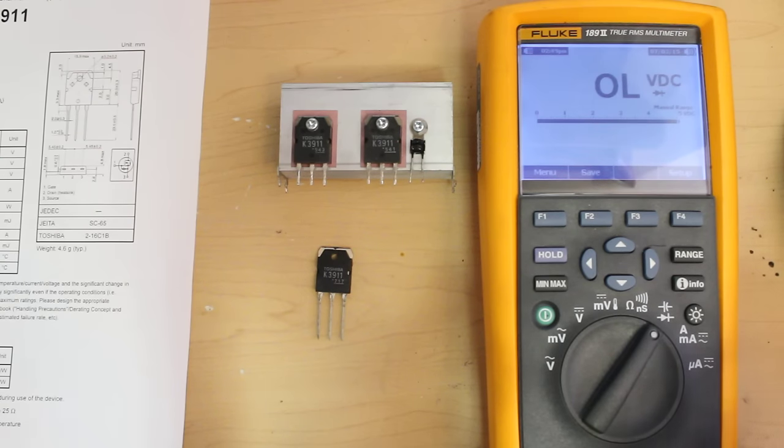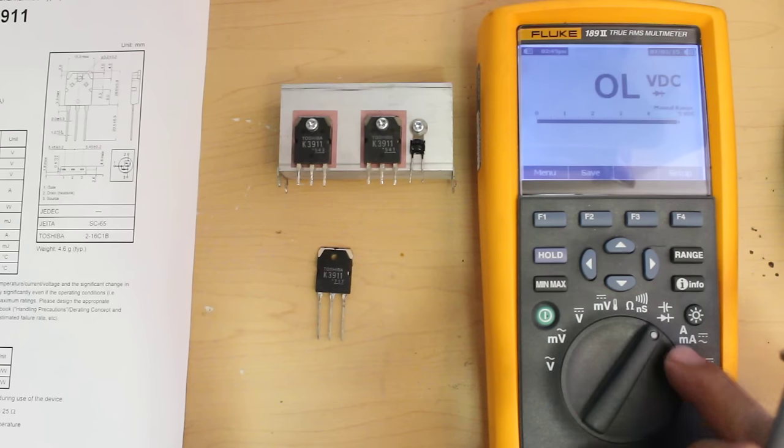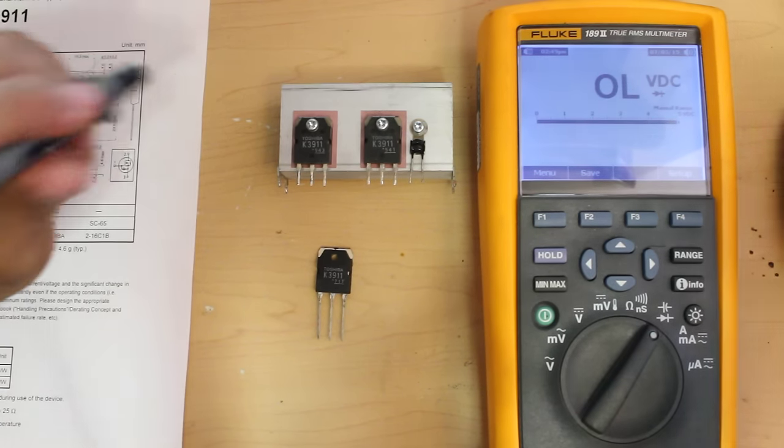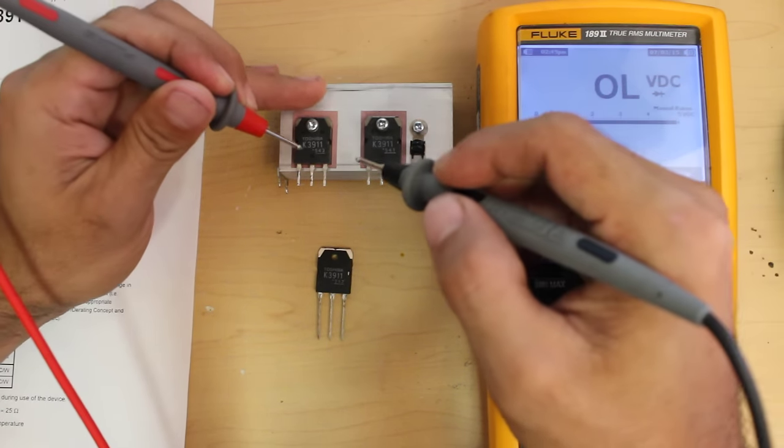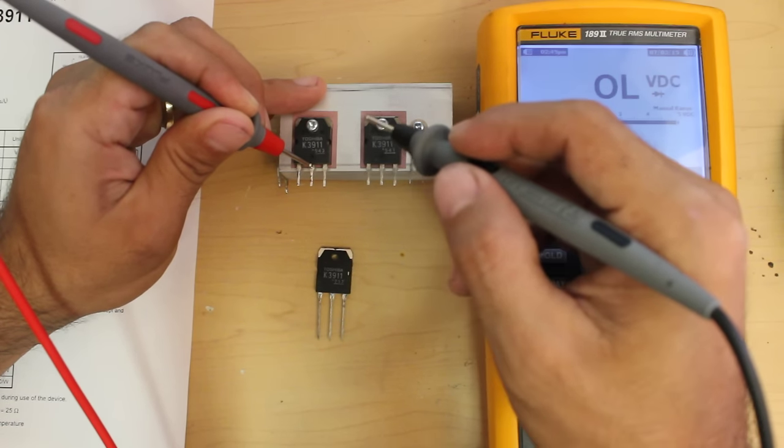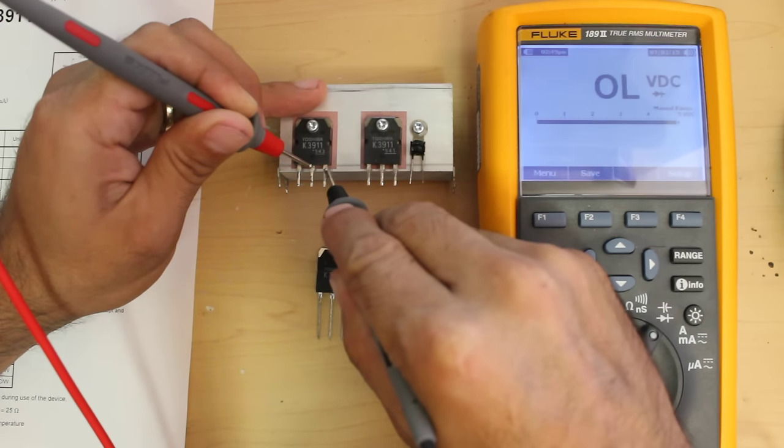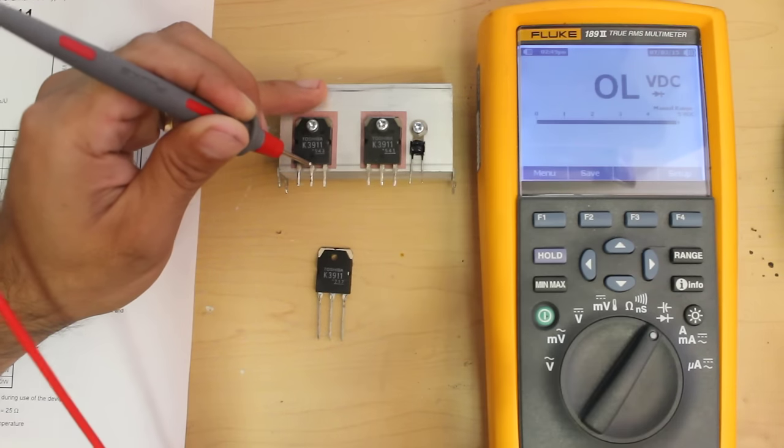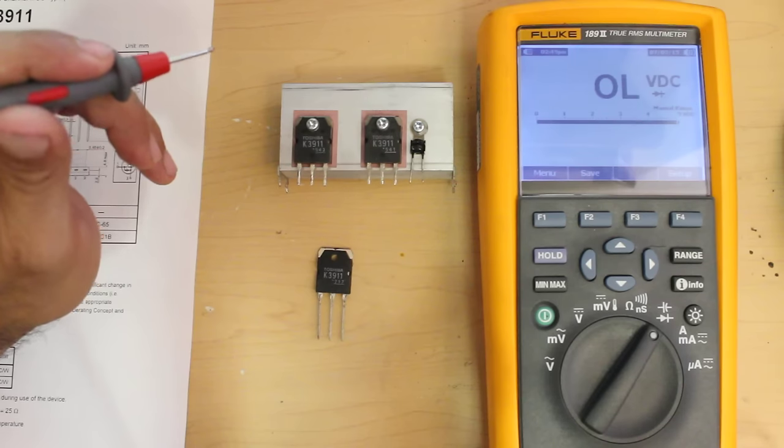You need to put your multimeter in diode testing mode. I'm going to put the positive lead to the drain and the negative lead to the source. There should be no connection. As you can see, there's a connection between the drain and the source, meaning that this MOSFET is shorted.